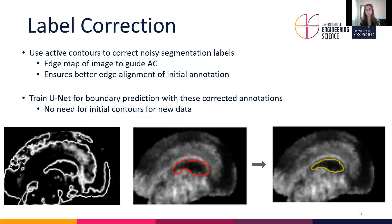Subsequently we want to train a U-Net with these updated labels to predict the boundaries of our structures. We want to train a U-Net with these contours instead of applying them directly, because this overcomes the need for initial contours for new data, which is way more practical.